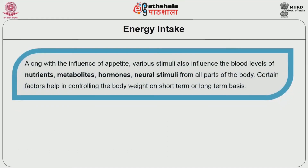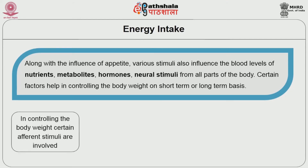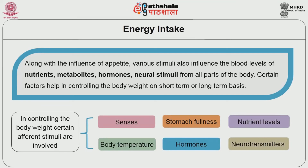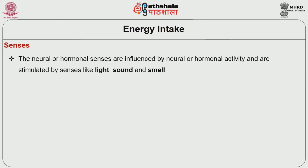Along with the influence of appetite, various stimuli also influence the blood levels of nutrients, metabolites, hormones, and neural stimuli from all parts of the body. Certain factors help in controlling the body weight on a short-term or long-term basis. These afferent stimuli include senses, stomach fullness, nutrient levels, body temperature, and hormones and neurotransmitters. The neural or hormonal sensors are influenced by neural or hormonal activity and are stimulated by sensors like light, sound and smell. These sensors stimulate or inhibit the appetite even before food is ingested.